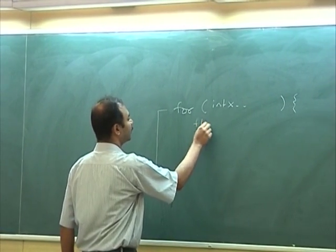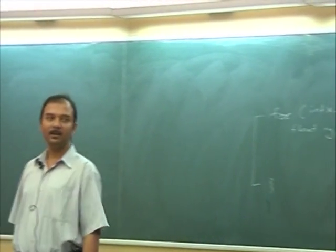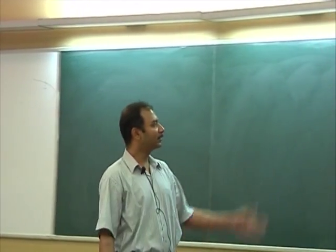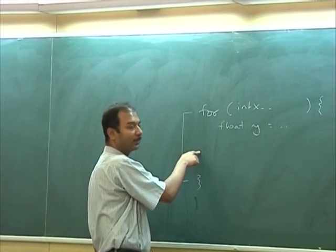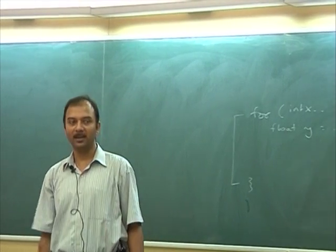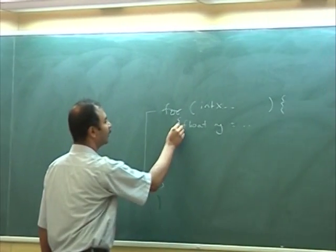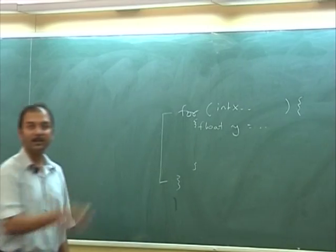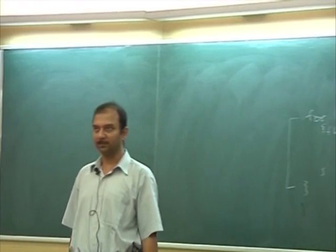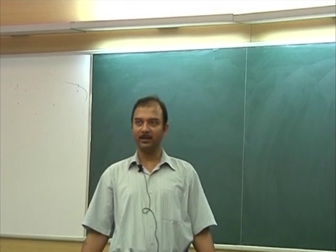Inside, you may declare 'float y', etc. These x and y are local short-lived variables. X is in effect throughout the for loop. Y is even more short-lived — y dies and gets reallocated every iteration of the for loop. So there's like an invisible curly around there and y is declared inside that, whereas x lives throughout the execution of the for loop. The stack is also used to allocate these.